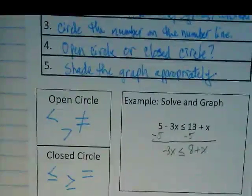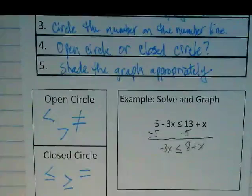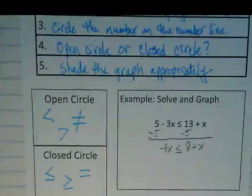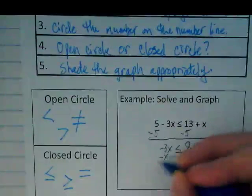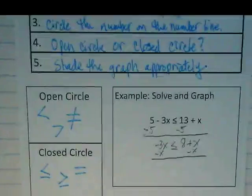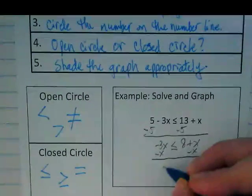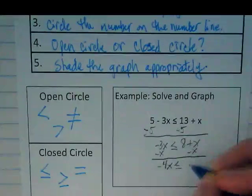What should we move next? The x. The x. We want to get it over with the negative 3x. So we're going to subtract it. Does this feel just like what we've been doing with equations? Now I have on the left side negative 4x is less than or equal to 8.